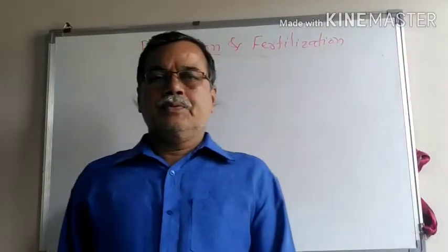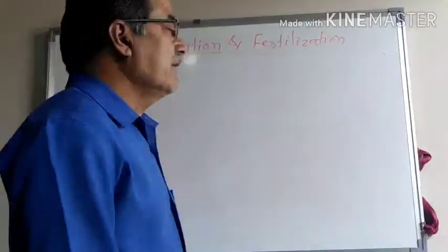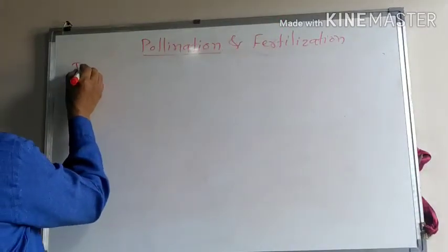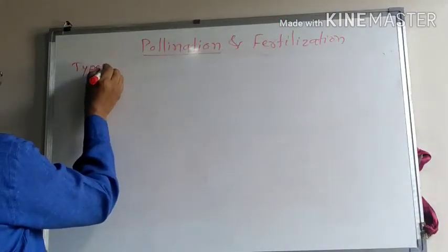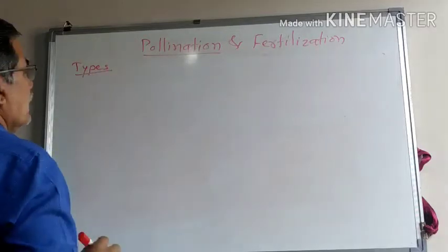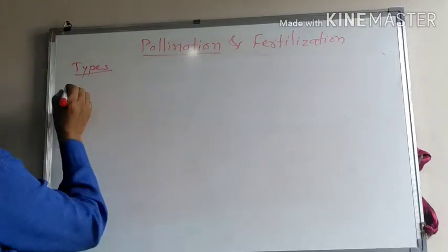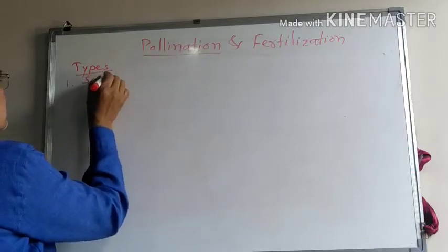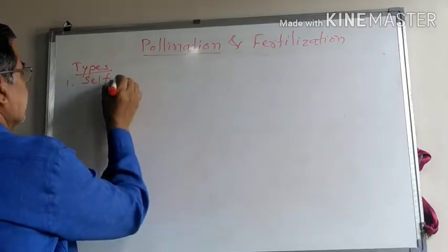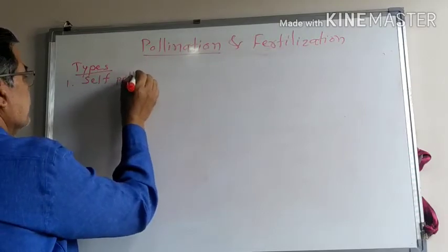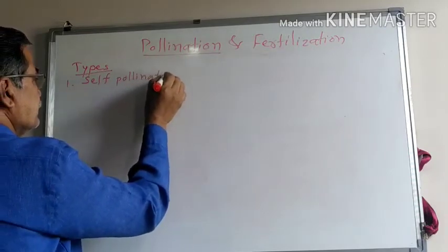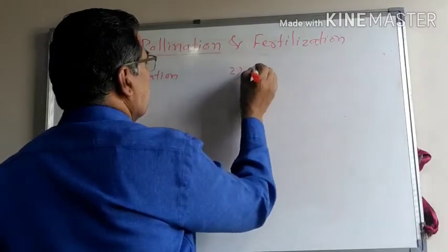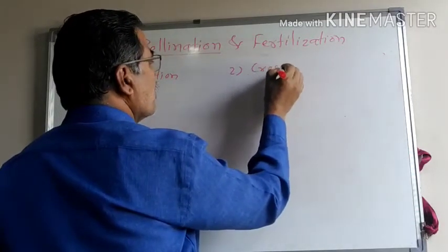Now we are going to turn towards the types of pollinators. There are two main types: one is the self-pollination and the second one is cross-pollination.